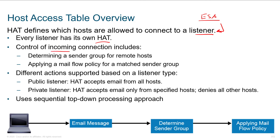We can control the incoming connections, determining a sender group for remote hosts as well as applying a mail flow policy for a matched sender group. When we talk about sender groups — people that we're going to be receiving emails from — when I receive emails from other people, how should I respond? What should my thresholds and limits be? You can be very broad with this or you can be a bit more specific.